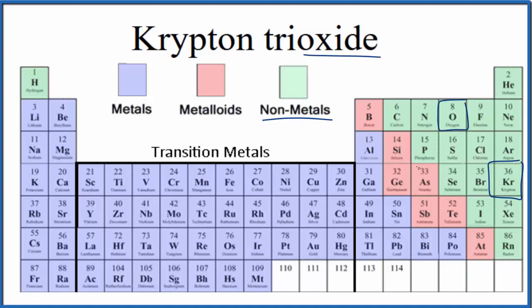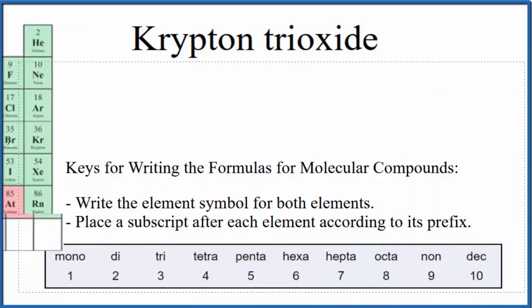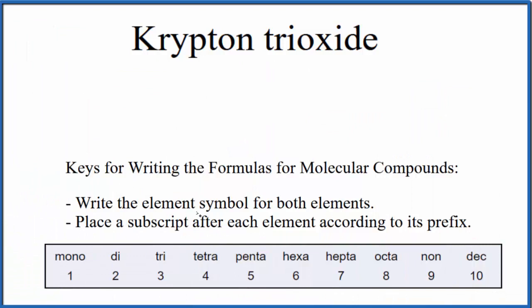So we have two nonmetals. That means we have a molecular, also called a covalent compound. And we can use these rules right here to write the formula.